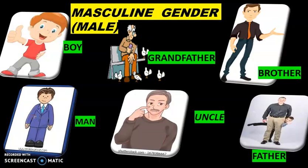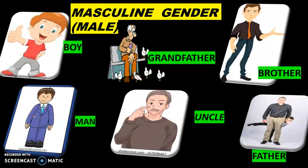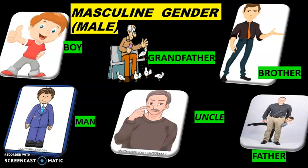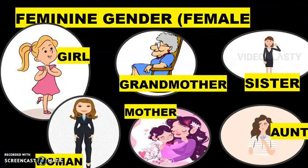We are going to see the examples of masculine gender, that is the male: boy, grandfather, brother, man, uncle, father. All these are examples of masculine gender.